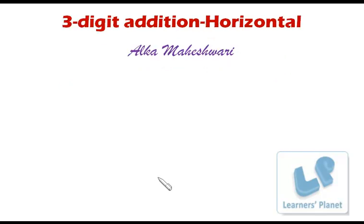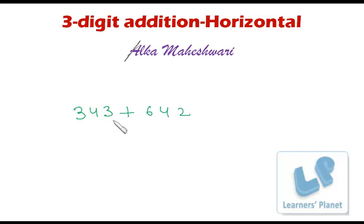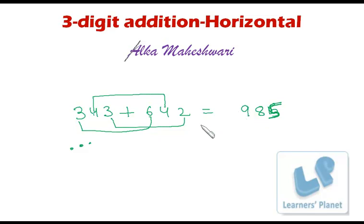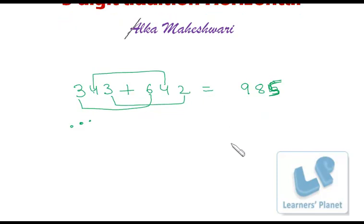Let's take an example. Suppose I have two numbers: 343 and I have to add 642. So this number has a ones place, tens place, and hundreds place — 1, 10, and 100. Add ones to ones and tens to tens. So 3 plus 2 is 5 — use your fingers to count. Then 4 plus 4 at tens place is 8. Then 3 and 6: keep 6 in your mind and count — 7, 8, 9. This is how you add numbers horizontally.